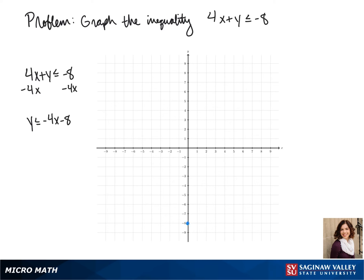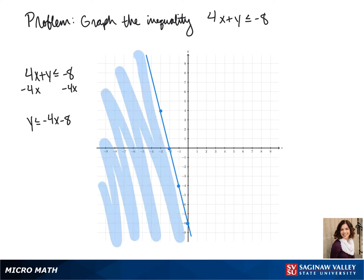So first we'll plot our y-intercept at negative 8, then go up 4 and back 1. To connect our points we use a solid line since it's less than or equal to in our equation. We shade in this side of the line since y is less than negative 4x minus 8.